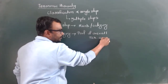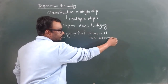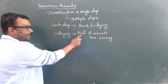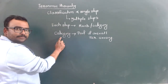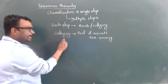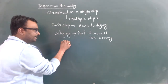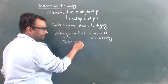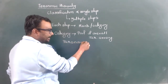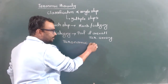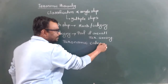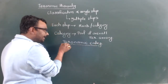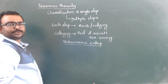Each rank in the taxonomic arrangement is a category part. The particular category is called a taxonomic category. In this context, a taxonomic category is a group of organisms organized at a specific level of the classification hierarchy.